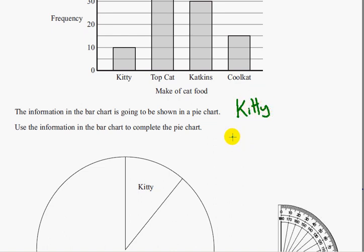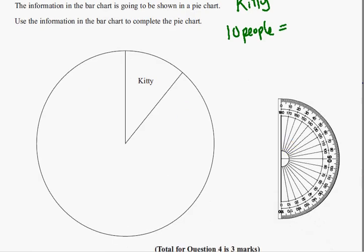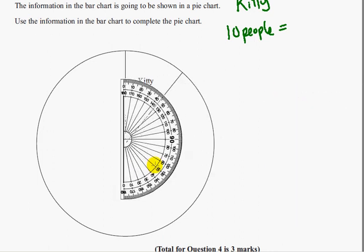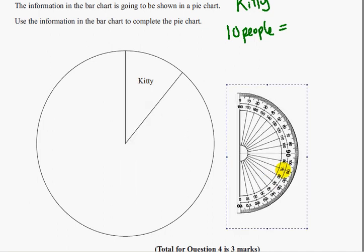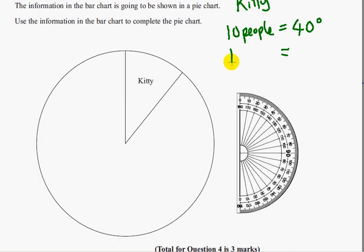So 10 people is represented by how much of the pie? So we need to measure the angle. So that is 40 degrees. So 40 degrees represents 10 people. That means one person is represented by 4 degrees.